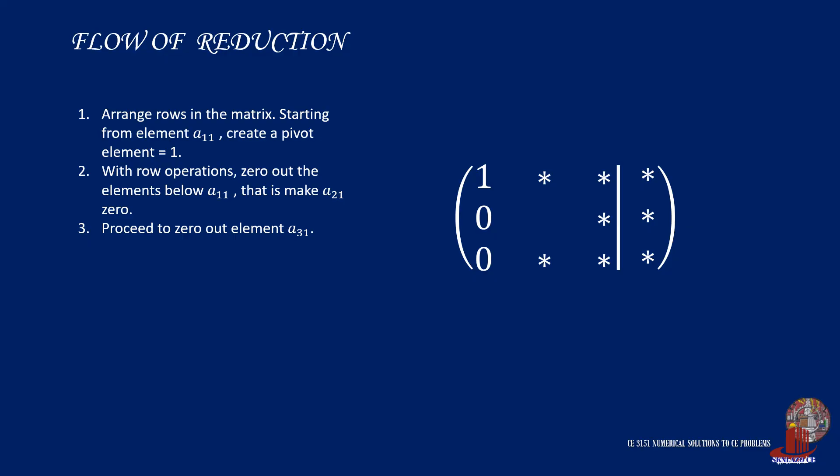After completing the first column, we can now move to the second column and again start with looking for a pivot element to be placed at element A22. Always it is easiest if our pivot element is reduced to a value of 1.